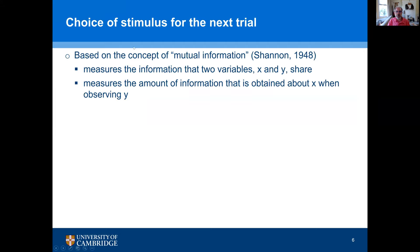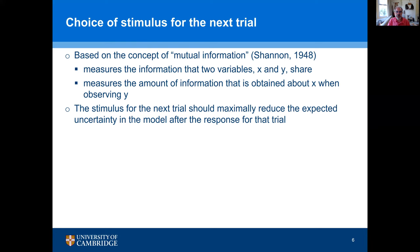Going back to the concept of mutual information: mutual information measures the information that two variables x and y share. Basically, it is a measure of the amount of information obtained about x when observing y — once we know y, how much have we learned about x. In Bayesian active learning, the stimulus for the next trial is chosen to maximally reduce the expected uncertainty in the model after the response for that trial.